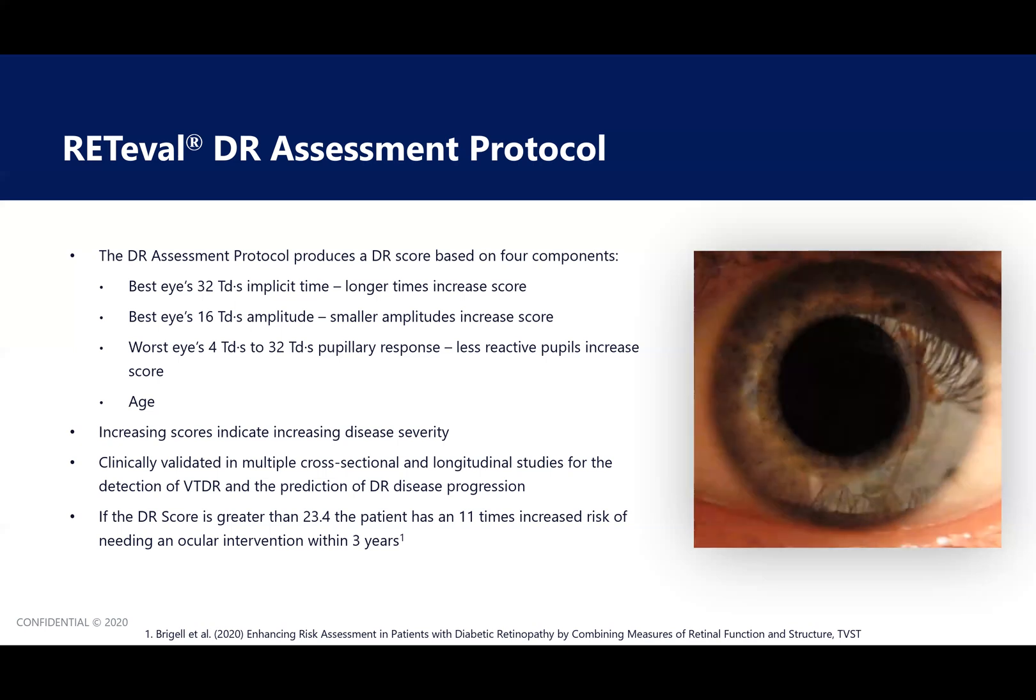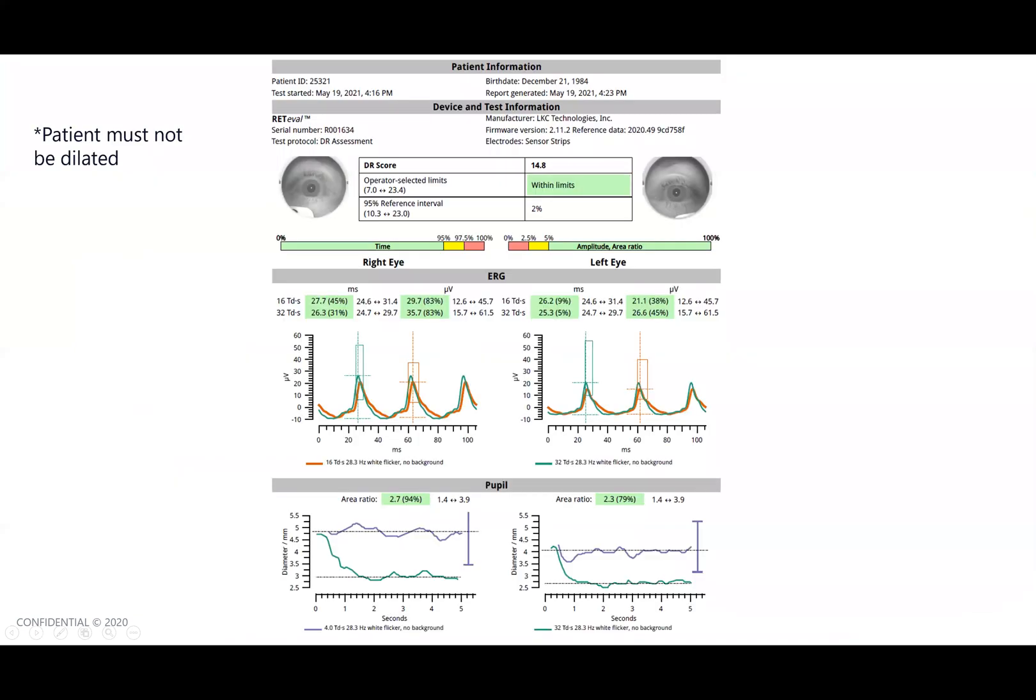The Briegel et al. study showed that if the DR score is greater than 23.4, the patient has an 11 times increased risk of needing an ocular intervention within three years. Remember, this test must be done on a patient who is not dilated, so make sure that you run this test on patients who are not dilated.